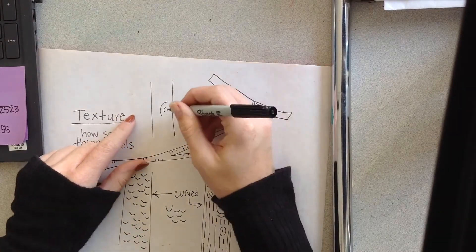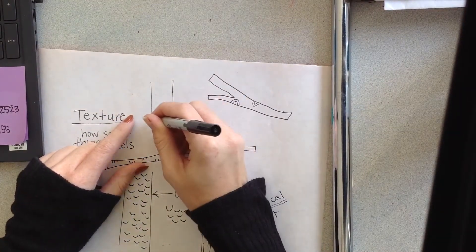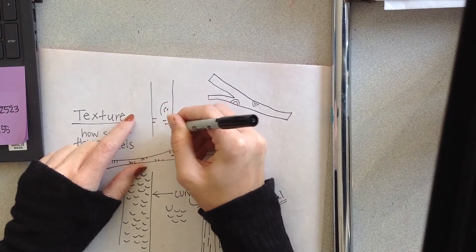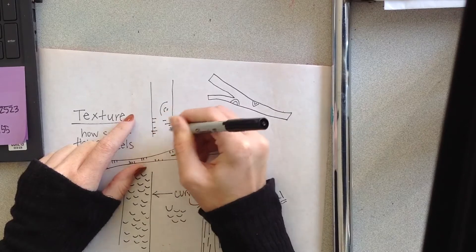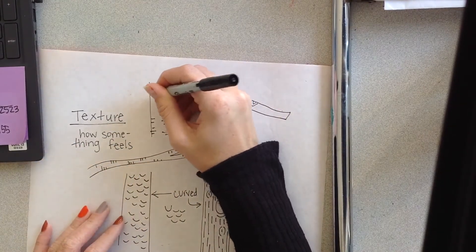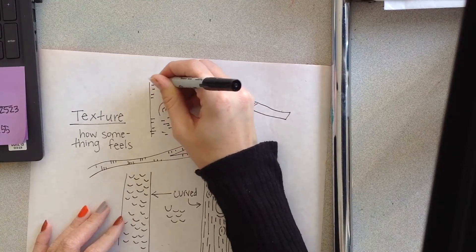And then I also saw trees that have these curved lines, but then they also have horizontal little lines. So there's so many different ways that you can add texture to the trees that you are going to draw.